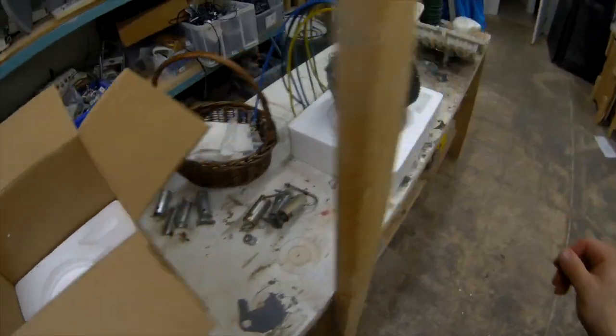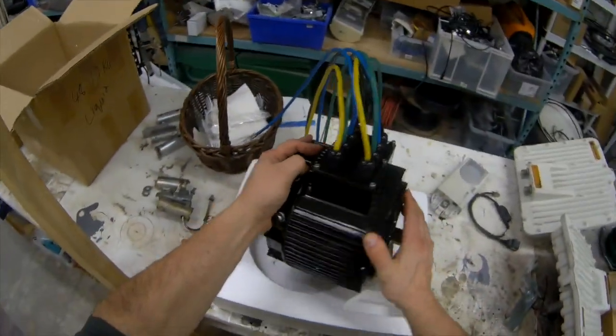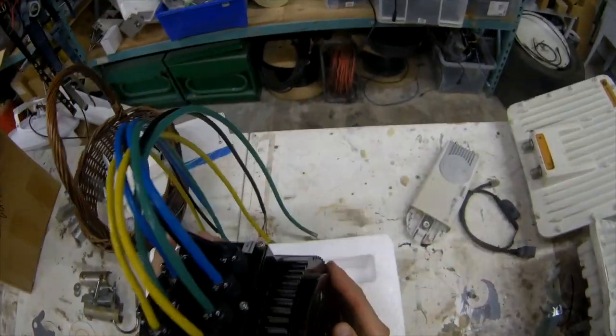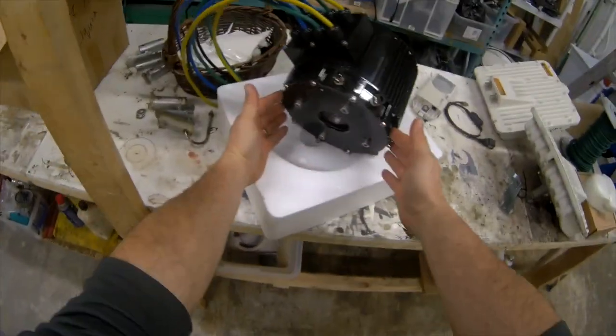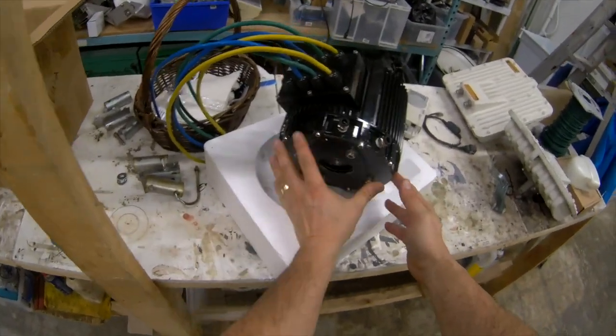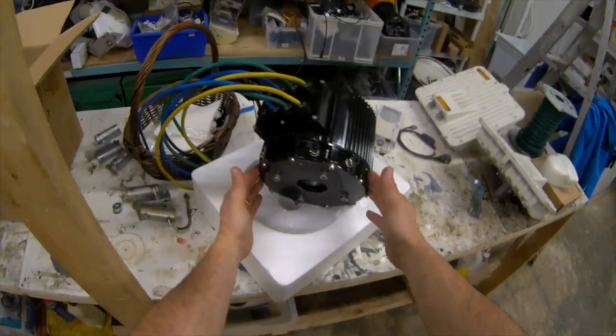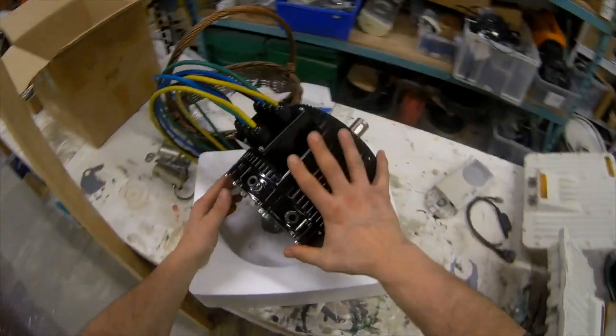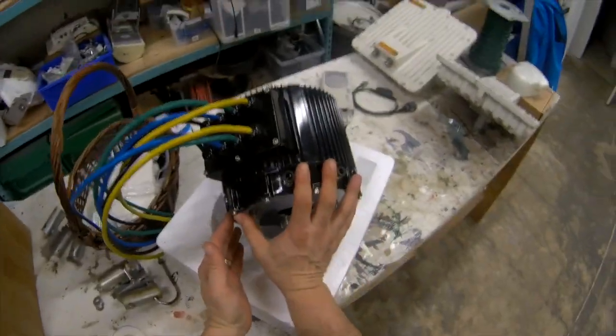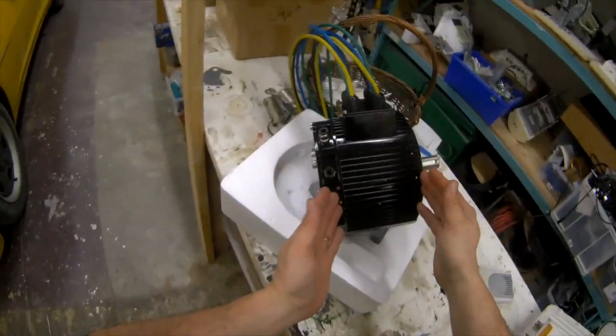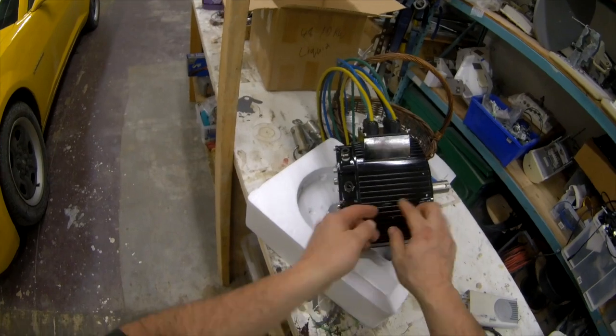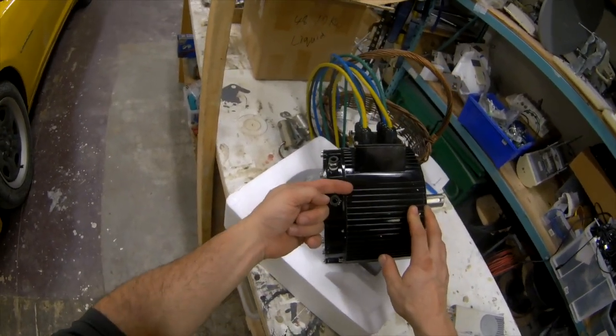That's what you get with the liquid cooling set. This motor weighs quite a bit. I'd say that's about six inches across, a little bit shorter with the back end.